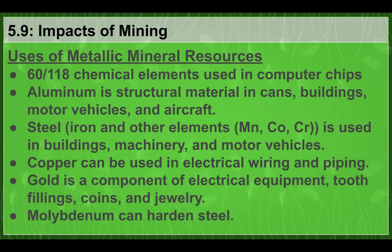About the uses of metallic mineral resources: 60 out of 118 chemical elements are actually used in computer chips, which is a staggering amount for such a small unit. Aluminum is used as a structural material for many things. Steel — mostly iron plus other elements — is used in buildings, machinery, and motor vehicles. Copper is used as a conductor in electrical wiring and piping. Gold is used for electrical equipment, tooth fillings, coins, and jewelry.